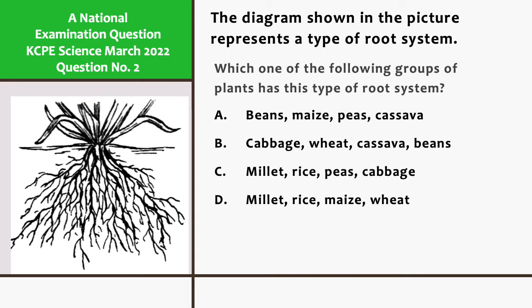B. Cabbage, wheat, cassava, and beans. C. Millet, rice, peas, and cabbage. D. Millet, rice, maize, and wheat.